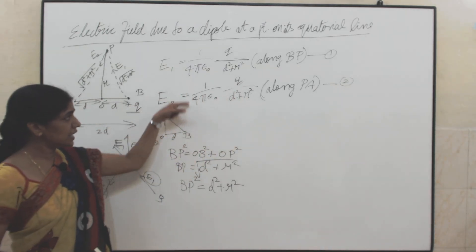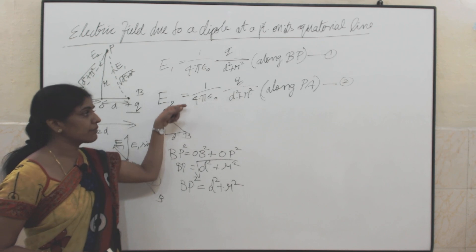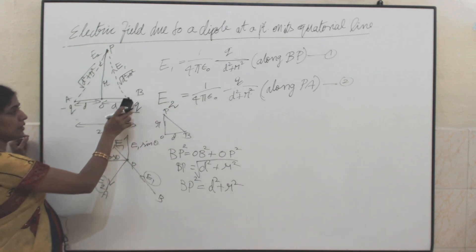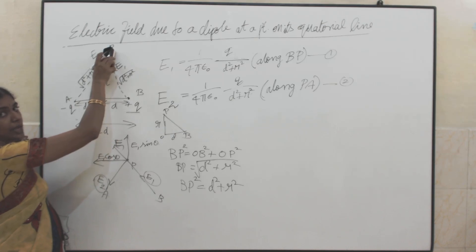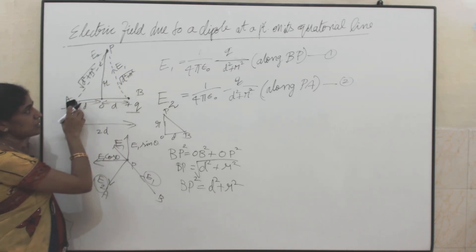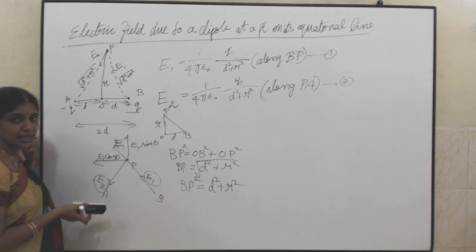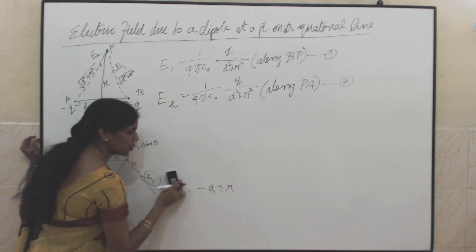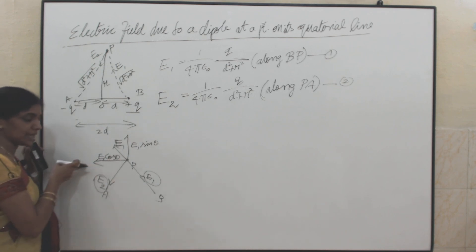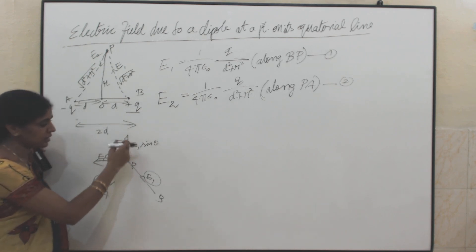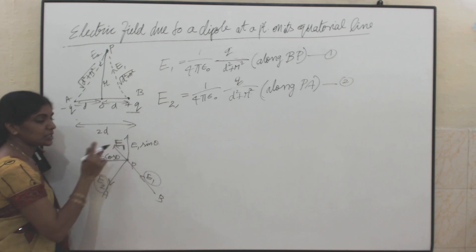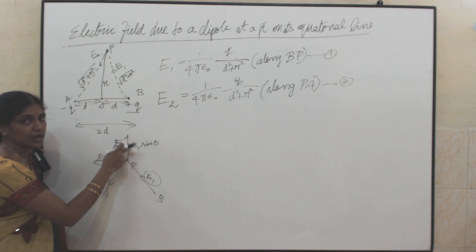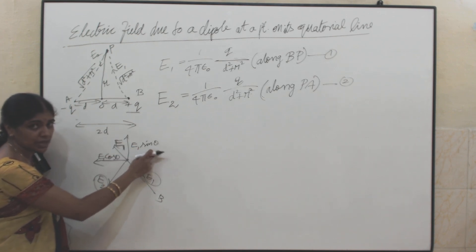Now, if you see these two electric fields, they are equal in magnitude but their direction is different. E1 is along BP and E2 is along PA. To find out the resultant electric field, I will resolve each electric field into two components — one along the x-axis and one along the y-axis. E1 is resolved into E1 cos theta along the x-axis and E1 sin theta along the y-axis.